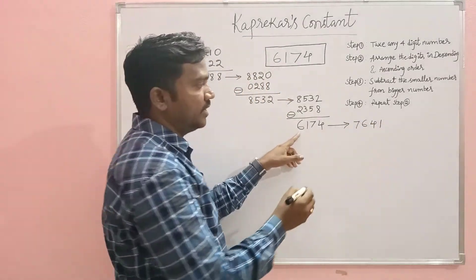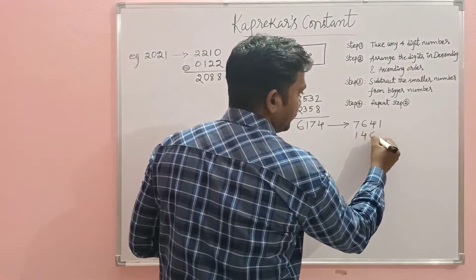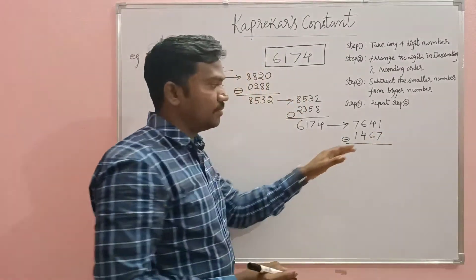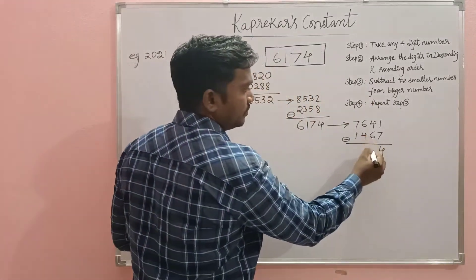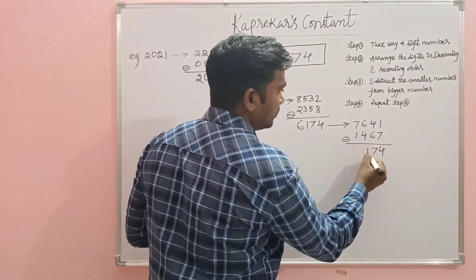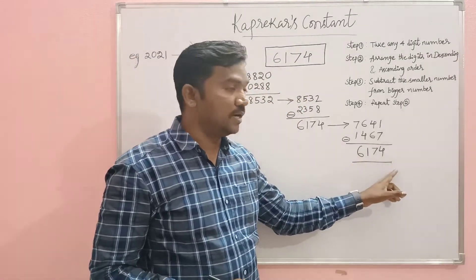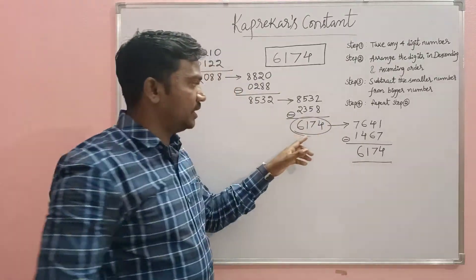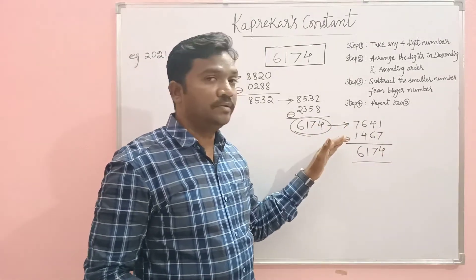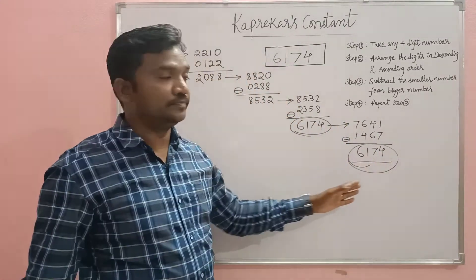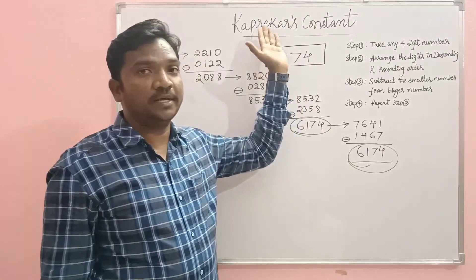We get 7641. Now arrange the digits in ascending order and subtract the smaller number from the bigger number. If you observe here — 6174. Even though we already got 6174, if you continue the process we get the same number again. So we can conclude that 6174 is Kaprekar's Constant.